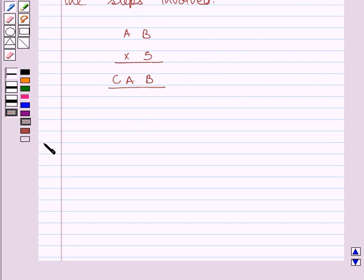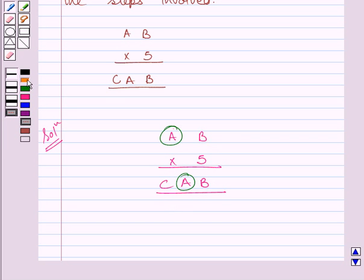Question says, find the values of the letters in the following and give reasons for the steps involved. Let us now move on to the solution. Now first of all, we will rewrite the given puzzle. That is, AB multiplied by 5 gives CAB. Now clearly you can see we need to find 3 letters. They are A, B and C.